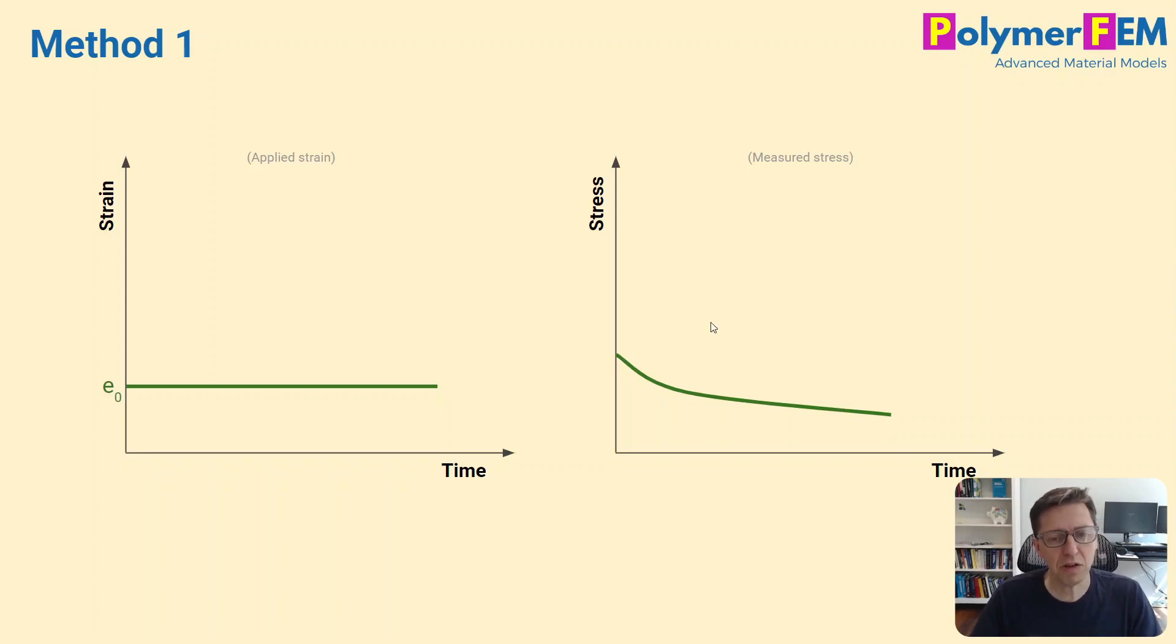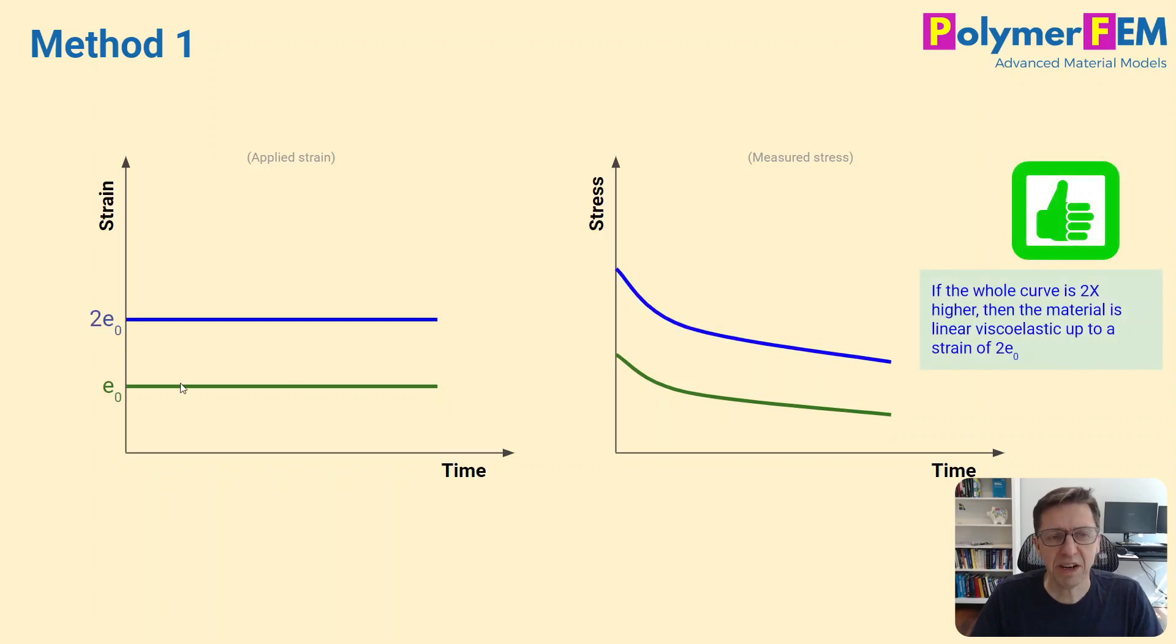What we can do though, and here's the trick, we do another experiment. We double, for example, the strain in the strain jump. So we go up to twice that strain and we hold the strain constant on the same material, a different specimen of the same material, and we measure the stress response as a function of time. If, in this case, when we double the strain, the stress also doubles,